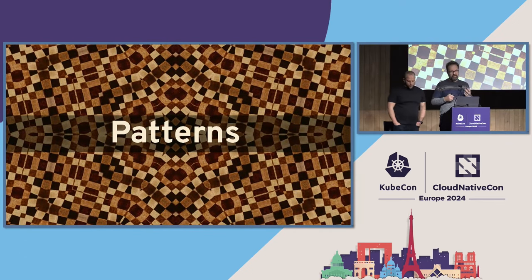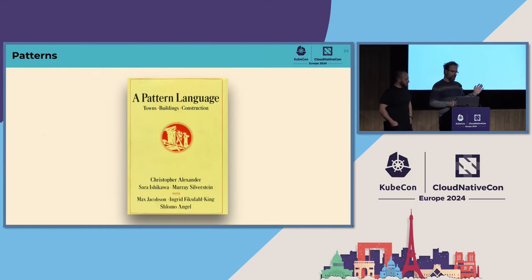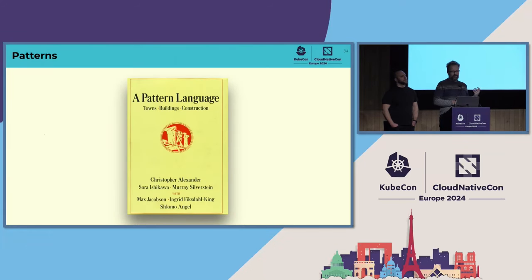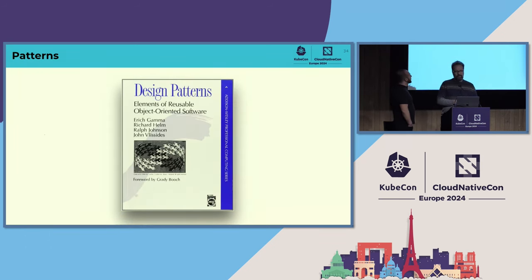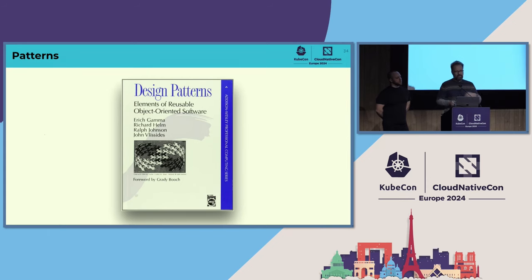Some quick introduction to what we mean with patterns or design patterns. This is a very famous book from 1977, not a computer book but from the field of architecture, written by Christopher Alexander who invented the idea of design patterns — repeatable solutions for common problems. When developers think of design patterns, we typically think about the Gang of Four book on object-oriented software. We are going to use the same form: patterns that are self-contained, have a name, are interconnected, and describe a blueprint for a class of problems.